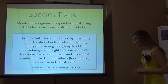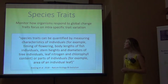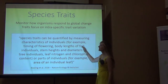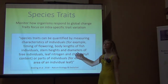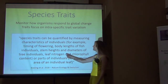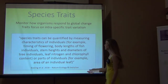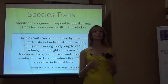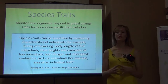As Kisling et al. have written, species traits can be quantified by measuring characteristics of individuals — things like timing of flowering, body lengths of fish, stem heights, diameters of tree individuals, chemistry such as leaf nitrogen and chlorophyll content, or even parts of individuals like the area of an individual leaf. Those are the types of traits we're talking about in an EBV context.